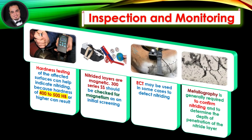Inspection and monitoring: Hardness testing of affected surfaces can help indicate nitriding, as hardness of 400 to 500 HB or higher can result. Nitrided layers are magnetic, so 300-series stainless steel should be checked for magnetism as an initial screening. Eddy current testing may be used in some cases to detect nitriding. Metallography is generally required to confirm nitriding and to determine the depth of penetration of the nitride layer.